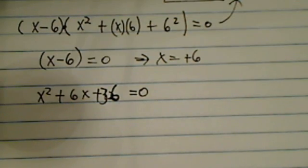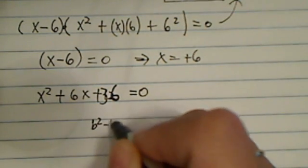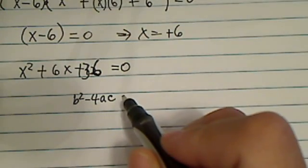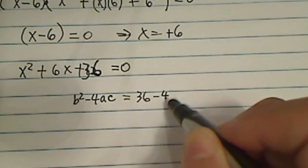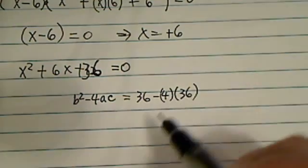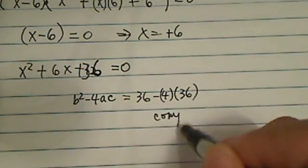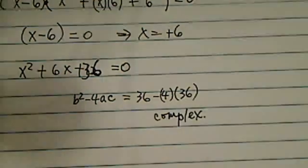From here, you can see b squared. If you just want to check if you have a regular real equation or not, you can see 36 minus 4 times 36. So from here, you'll see it's a complex solution.